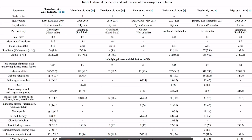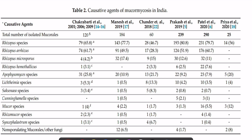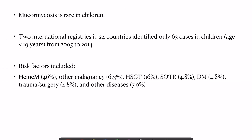Looking at incidence and epidemiology in India, data from over the last 20 years shows around 2,000 reported cases, with diabetes remaining the most common risk factor. The overall incidence is not very high given only 2,000 cases in 20 years. The most common causative organism is Rhizopus, followed by Apophysomyces. In children, it is extremely rare — two large international registries across 24 countries identified only 63 cases over nine years, mostly restricted to hematological malignancies.